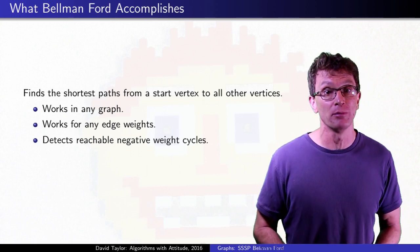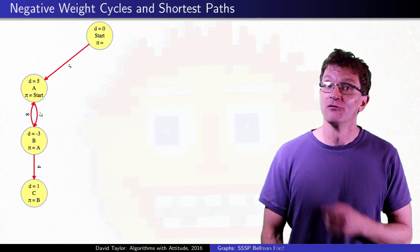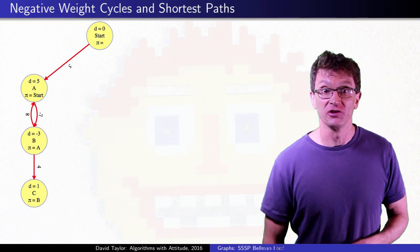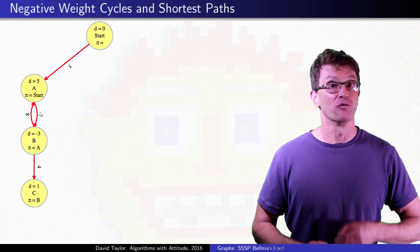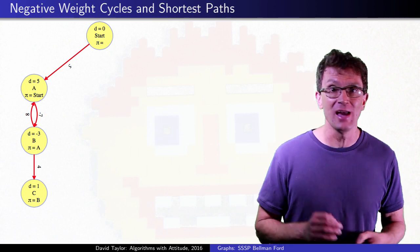Negative weight cycles are a bit of a problem for shortest weight paths. For this graph, with start as the start node, the negative weight edges don't cause any problems. We have well-defined shortest paths to A, B, and C.